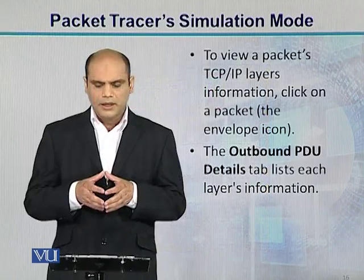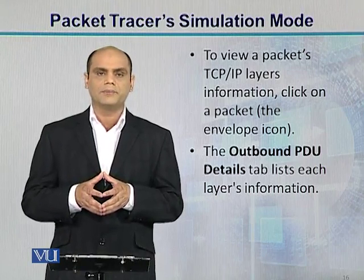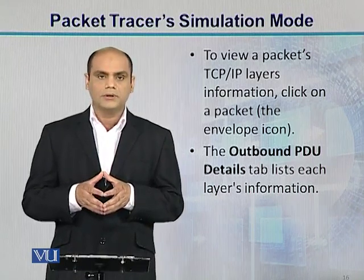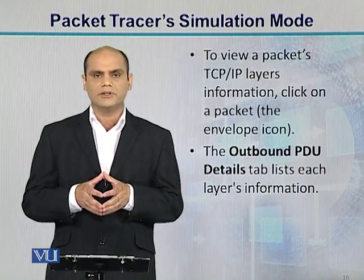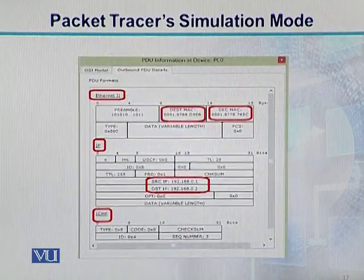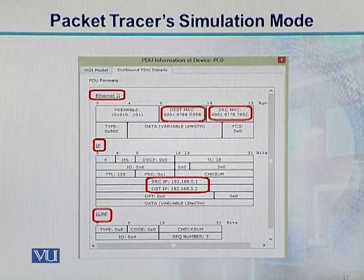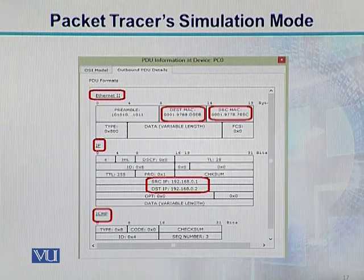Agar aapne kisi packet ki TCP/IP layers ki information view karni hai, toh us packet pe click karein. Jab aap us packet pe click karenge, toh outbound PDU details tab ko enable kar den. Aapko layers ki information nazar aane lagegi. Humne ek packet pe click kiya aur outbound PDU details pe gaye — is packet mein Ethernet ki, IP ki, ICMP ki information maujood hai: Ethernet mein destination MAC address, source MAC address; IP mein source IP, destination IP.